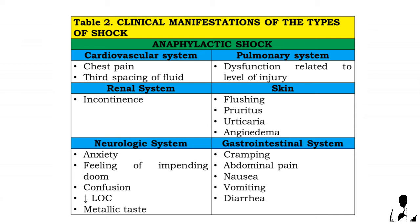Chest pain and third spacing of fluid. Pulmonary system: dysfunction related to level of injury. Renal system: incontinence. Skin: flushing, pruritus, urticaria, and angioedema. Neurologic system: anxiety, feeling of impending doom, confusion, decreased level of consciousness, and metallic taste. Gastrointestinal system: cramping, abdominal pain, nausea, vomiting, and diarrhea.